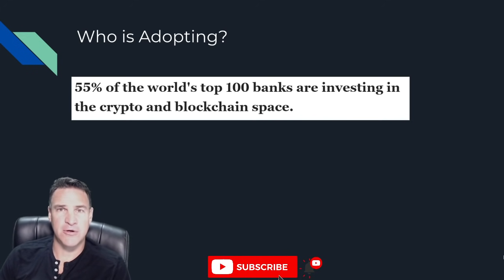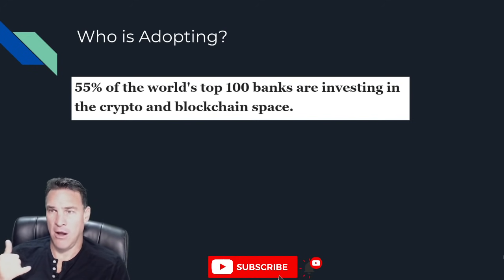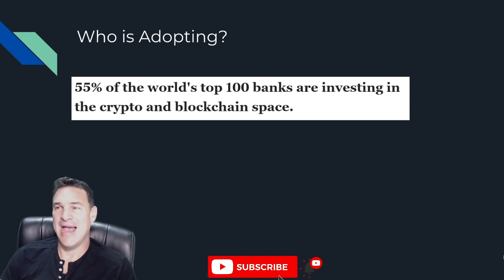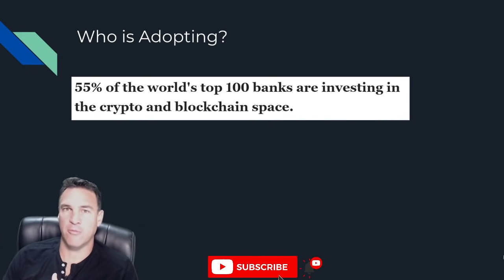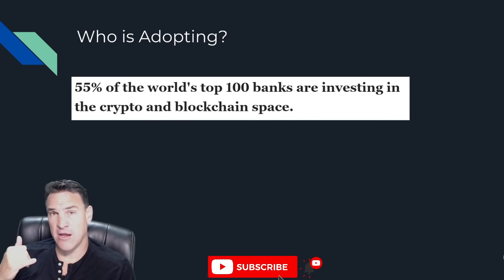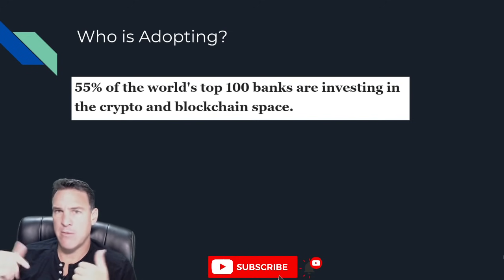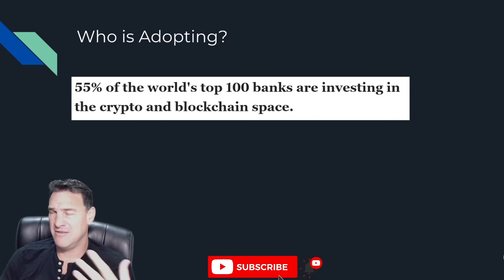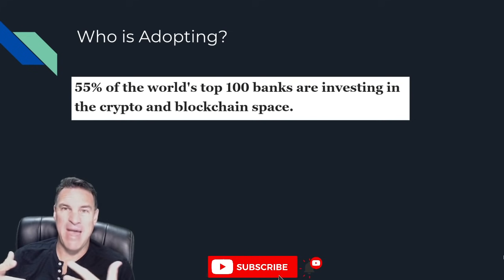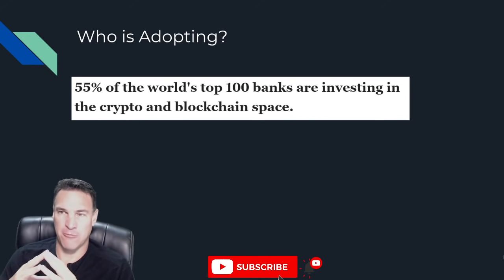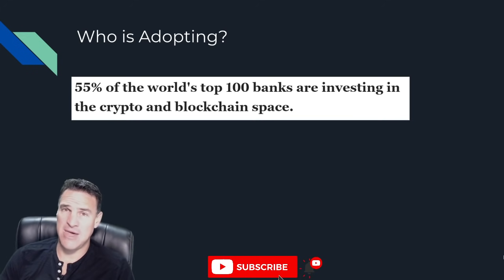55 percent of the world's top 100 banks are investing in the crypto and blockchain space. This is game theory — as much as banks don't want to do this, they have no choice. The money will leave and they'll become redundant. It's like Blockbuster: you can watch the streaming video technology take hold and become completely irrelevant, or you can use your vast resources, retool, and become Netflix. The banks have the smartest people in the world — they understand that whether they like it or not, they have to adapt or get put out of business. Every single bank is falling in line. They have no choice.